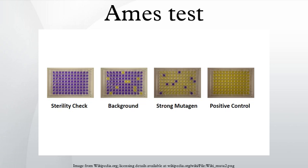Mutagens identified via the Ames test are also possible carcinogens. Early studies by Ames showed that 90% of known carcinogens may be identified via this test; later studies, however, showed identification of 50 to 70% of known carcinogens.